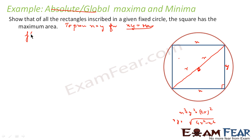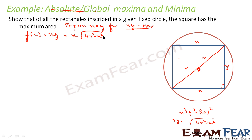Now the area function is A = x·y. I have to find the value of x for which area is maximum. Replacing y, the area function becomes A = x·√(4r² - x²). I have to find the value of x for which this function is maximum.